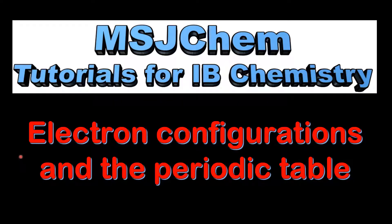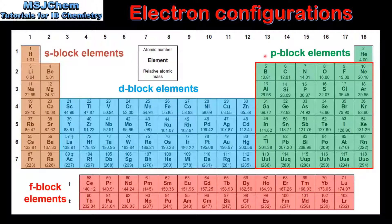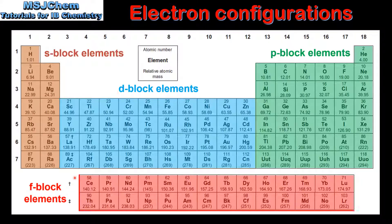This is MSJChem. In this video I'll be looking at electron configurations and the periodic table. As we can see, the elements in the periodic table are divided into blocks. Elements in groups 1 and 2 are in the S block. Elements in groups 13 to 18 are in the P block. Elements in groups 3 to 12 are in the D block. And at the bottom of the periodic table we have elements in the F block.